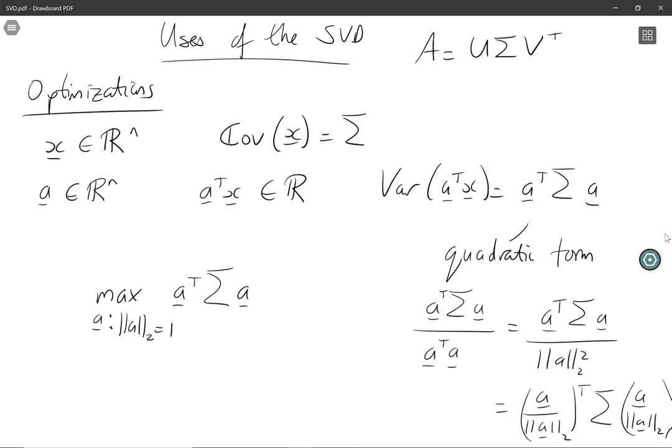So this maximization problem, this constraint maximization problem is actually the same as maximizing a transposed Σ a divided by a transposed a. So I can choose to solve either of these two problems, either the constrained maximization problem or the unconstrained maximization problem.